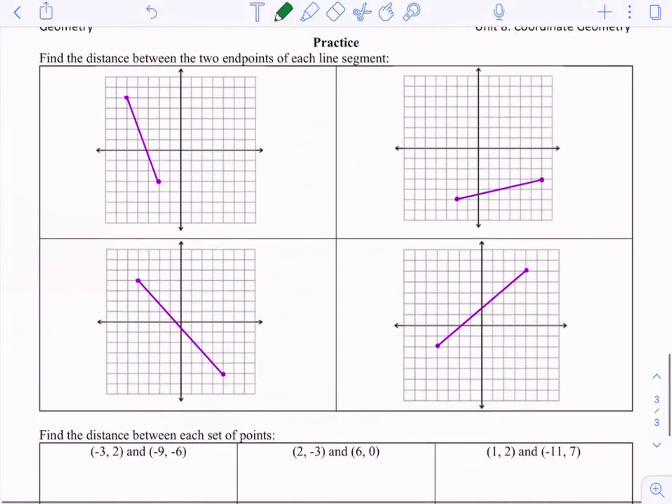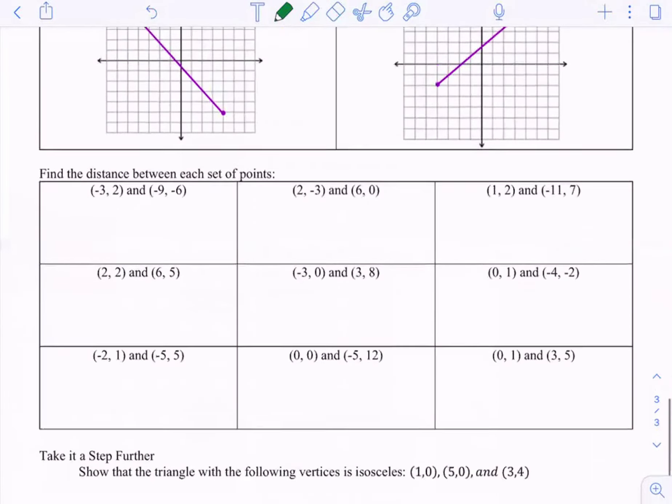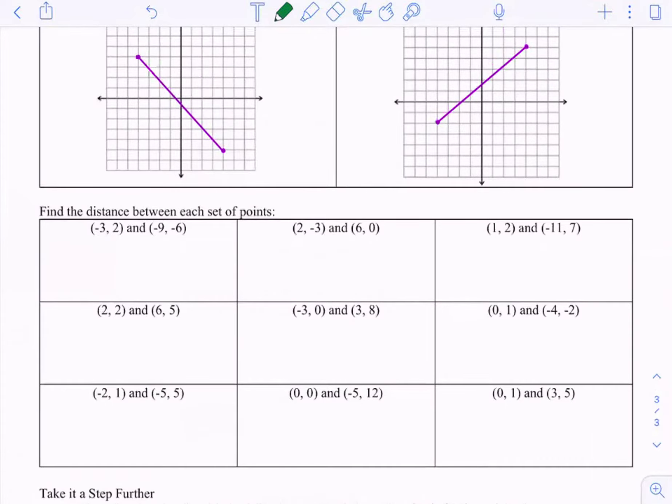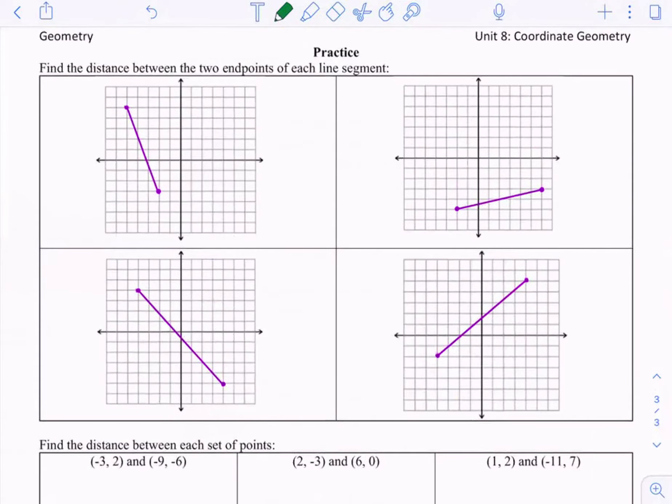So I have a few examples here for you. So if I give you the graph, you can easily do Pythagorean theorem. But if I give you two points just like that and ask you to do the distance, you may want to resort to using the formula. So how about you pause the video here, give a try on some of these problems, and then come back and see what the answers are. Good luck.